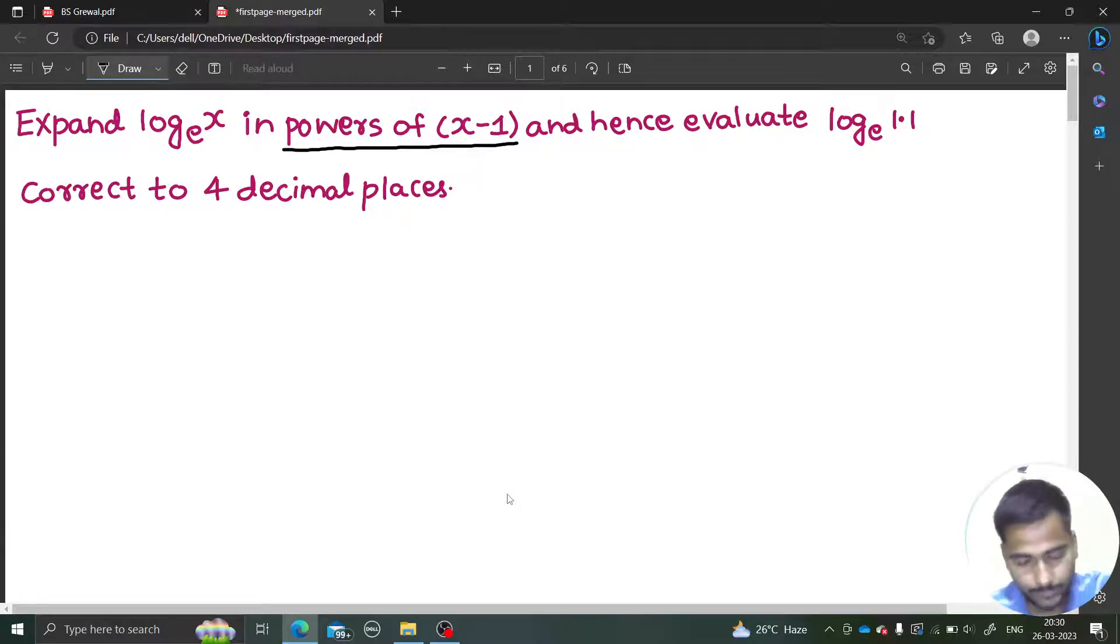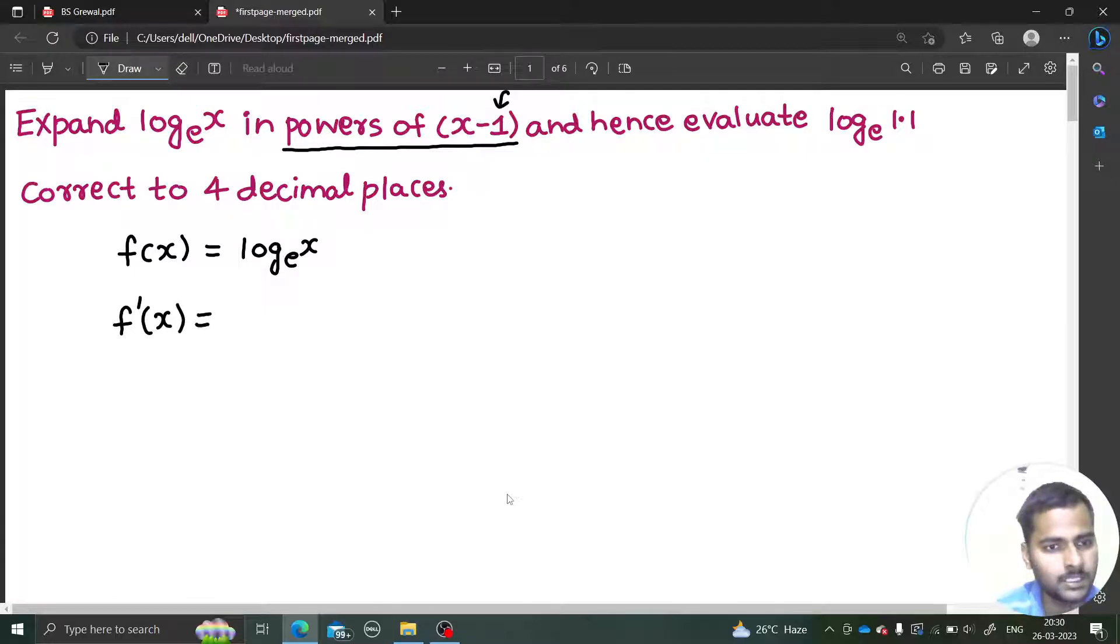Because it is a problem of Taylor series, we need derivatives. So let us start off with the function which is log x to the base e. We need derivative and value of derivative at this point 1, because that is a, x minus a that comes in the Taylor series. The first derivative is 1 by x because base e is there.